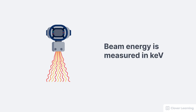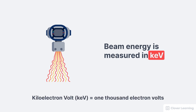When discussing the x-ray beam, we use specific units of measure. The energy of the x-ray beam is measured in keV — that's kilo, or 1,000, electron volts. This measurement tells us nothing about the total amount of radiation, but it does tell us the average energy of the radiation in the x-ray beam.